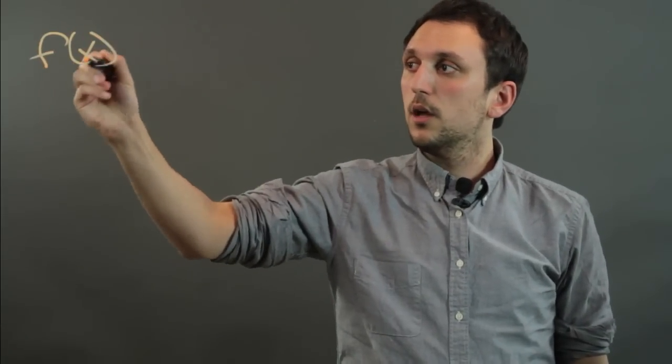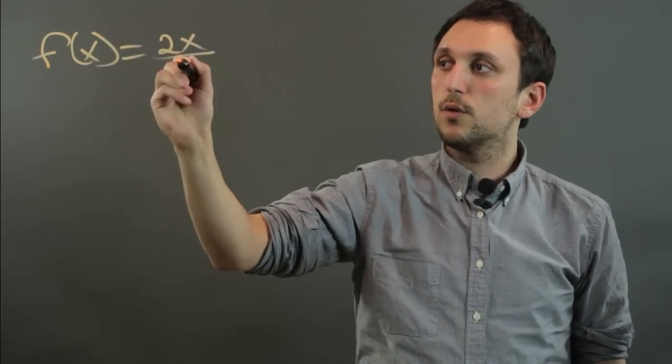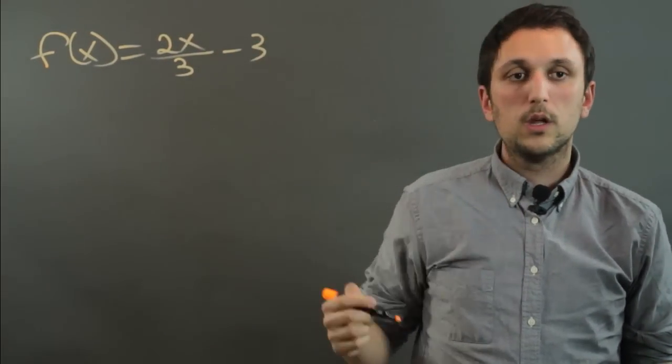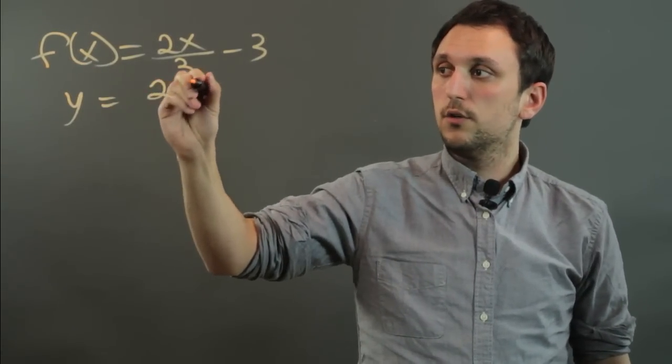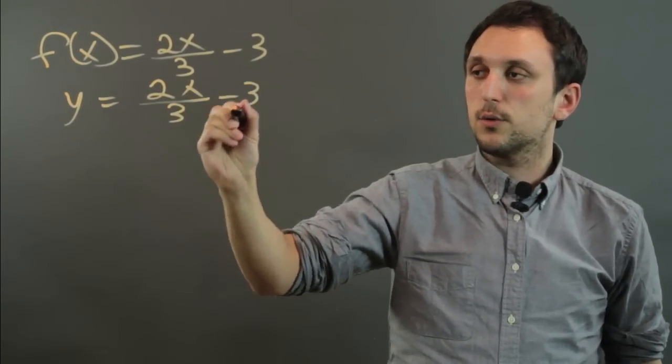Let's say f of x equals 2x over 3 minus 3. So first we would say this is like y. So y equals 2x over 3 minus 3.